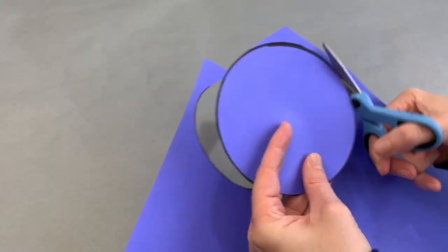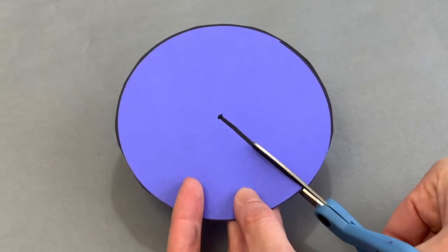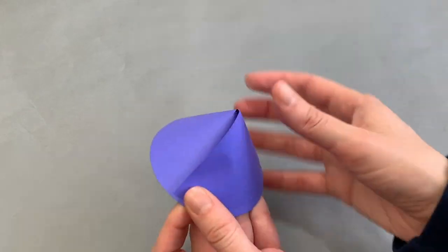To make a cone, cut out a round shape. Then cut a line to the center, overlap the sides, and add tape.